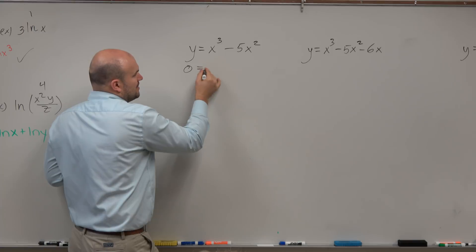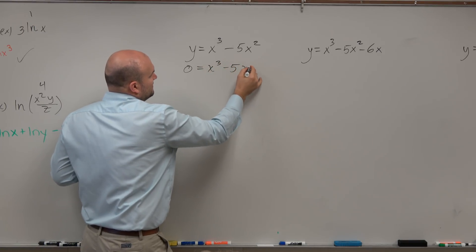So the first thing I want to do is just make sure I set my y equal to 0. x cubed minus 5 x squared.